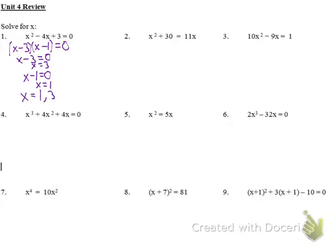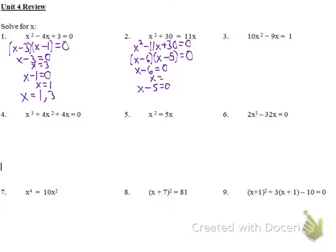Number two, I need to get everything over to the same side, so I'm going to subtract 11x from both sides. It becomes x squared minus 11x plus 30 equals zero. I'm looking for a product of 30 that adds to negative 11. I could do x minus 6, x minus 5. Then x minus 6 equals 0, x minus 5 equals 0, so x equals 6 and x equals 5.